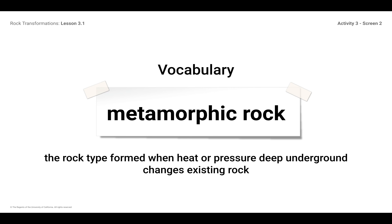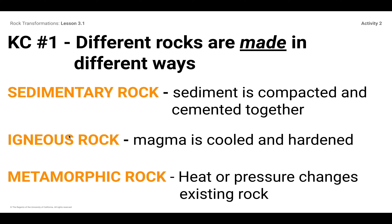I want to remind you of Key Concept Number One: different rocks are made in different ways. If we look at the three different types of rocks, they're different because they're made in different ways. Sedimentary rock is made when sediment is compacted and cemented together. Igneous rock is made when magma is cooled and hardened. And metamorphic rock is made when heat or pressure changes an existing rock. Here's the crazy thing — sedimentary rock, igneous rock, and even metamorphic rock can get transformed into metamorphic rock when exposed to heat or pressure.